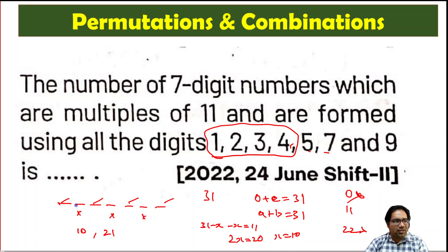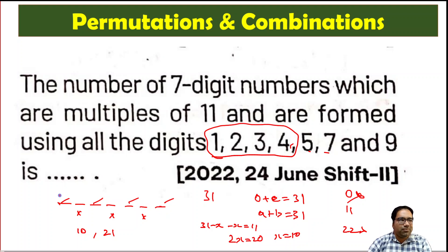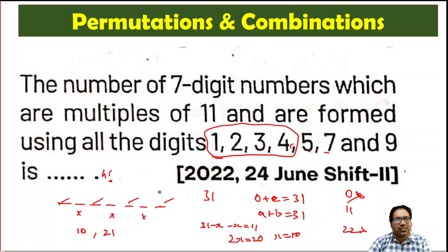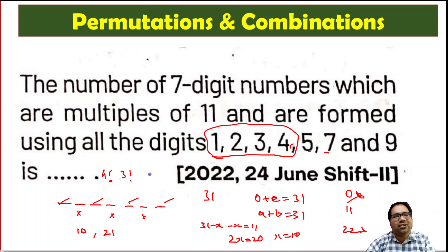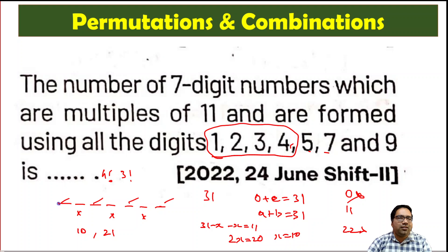So if the numbers in the odd positions must add up to 10, only the digits {1,2,3,4} can fill those 4 slots — arrangeable in 4! ways — and the remaining digits {5,7,9} fill the 3 even slots in 3! ways. This gives 4! × 3! arrangements for the case where the odd-position sum equals 10.